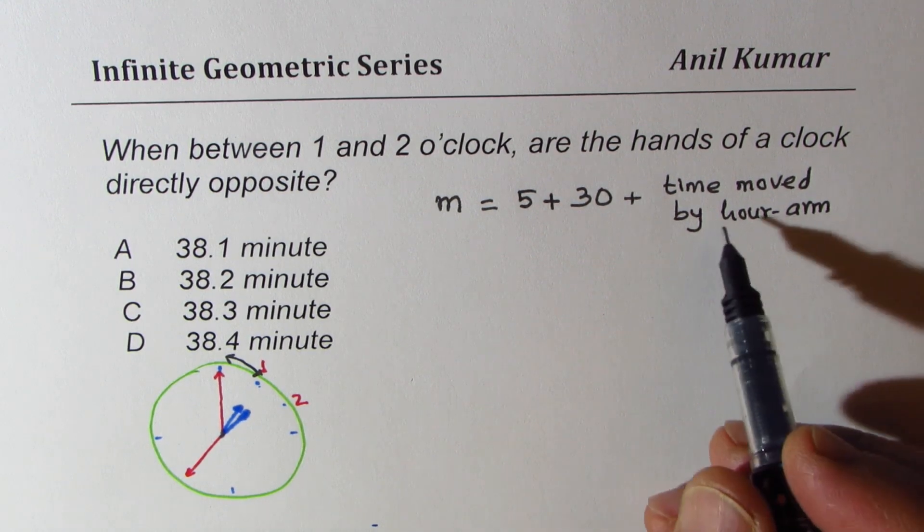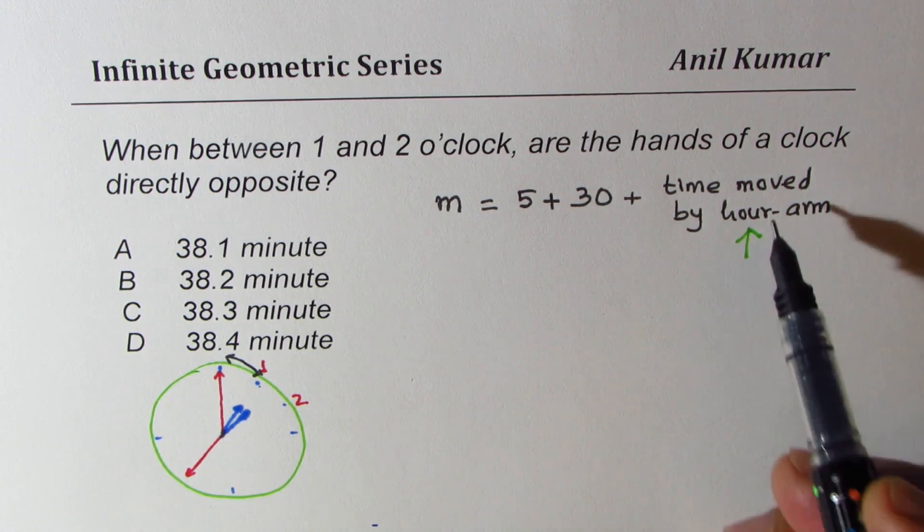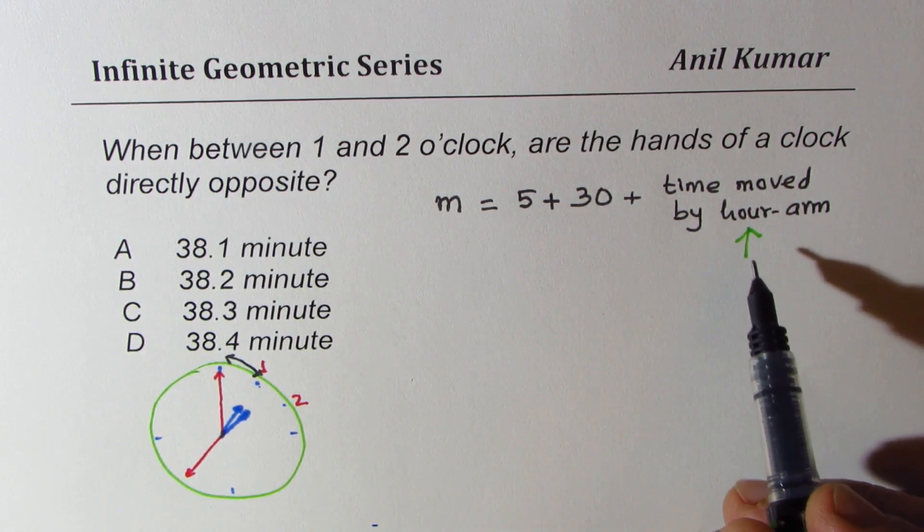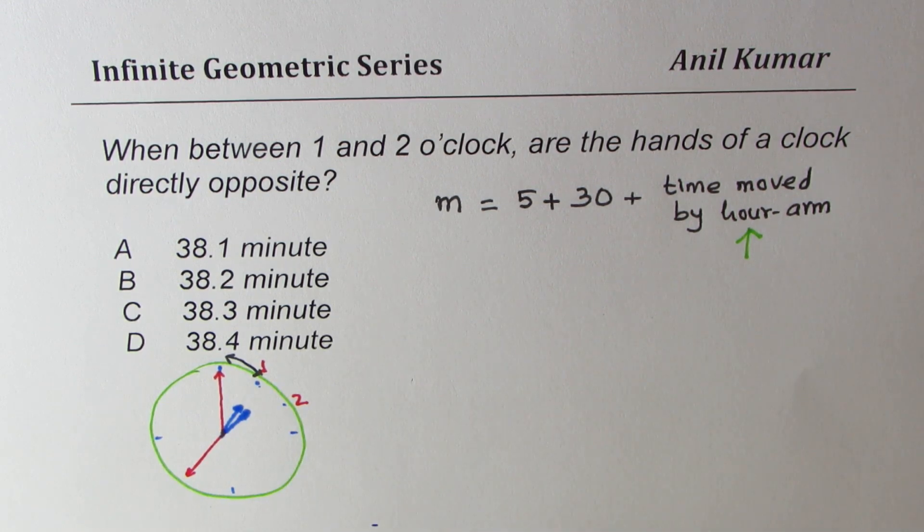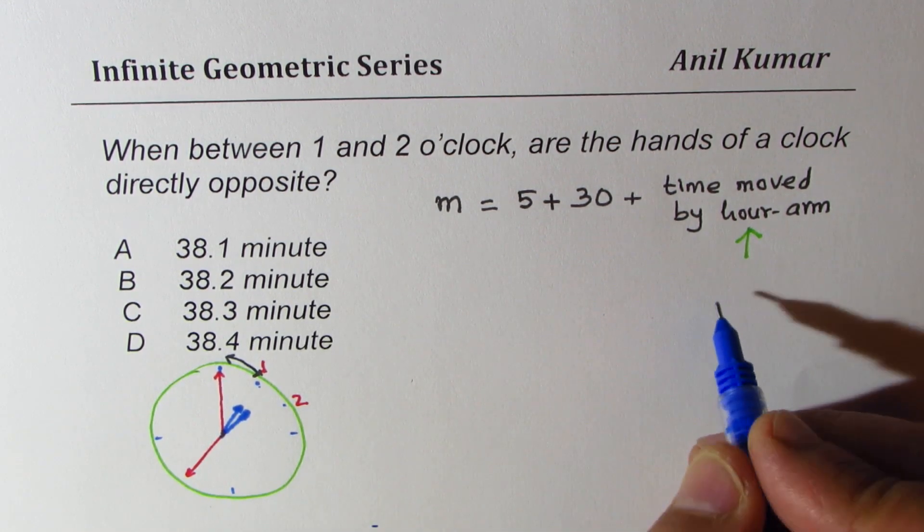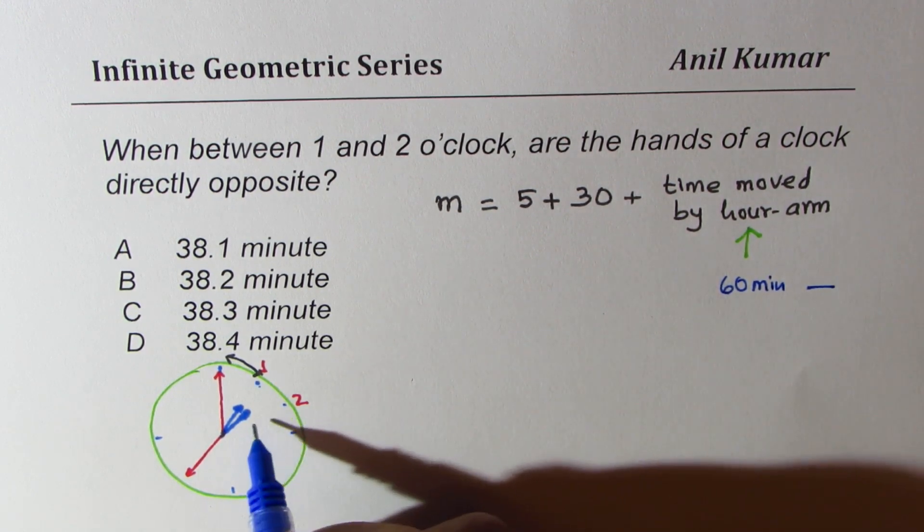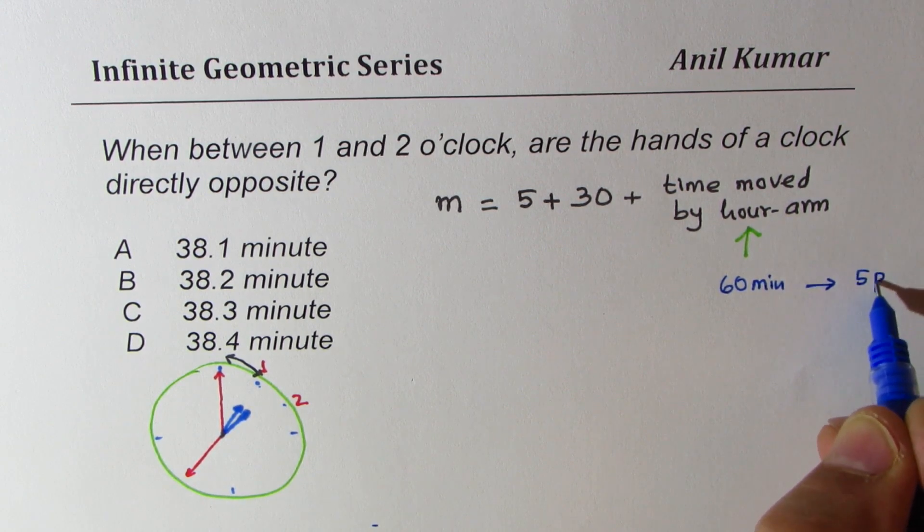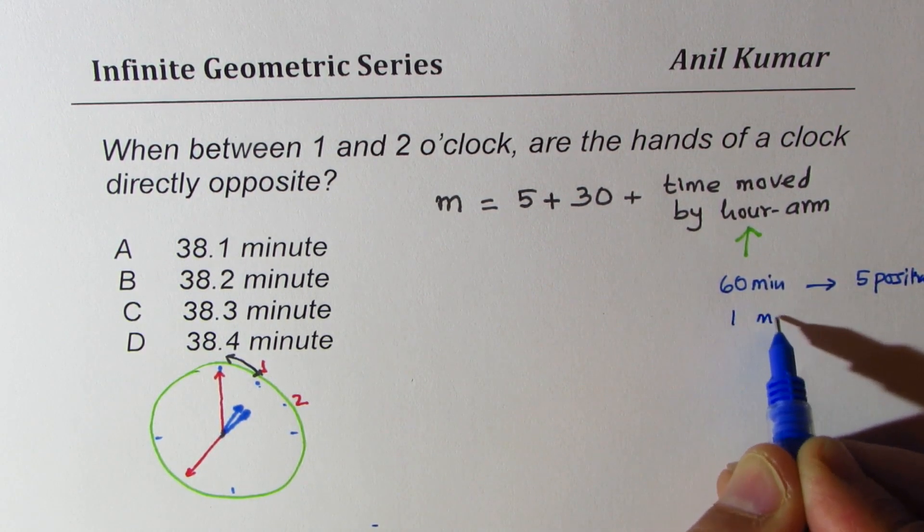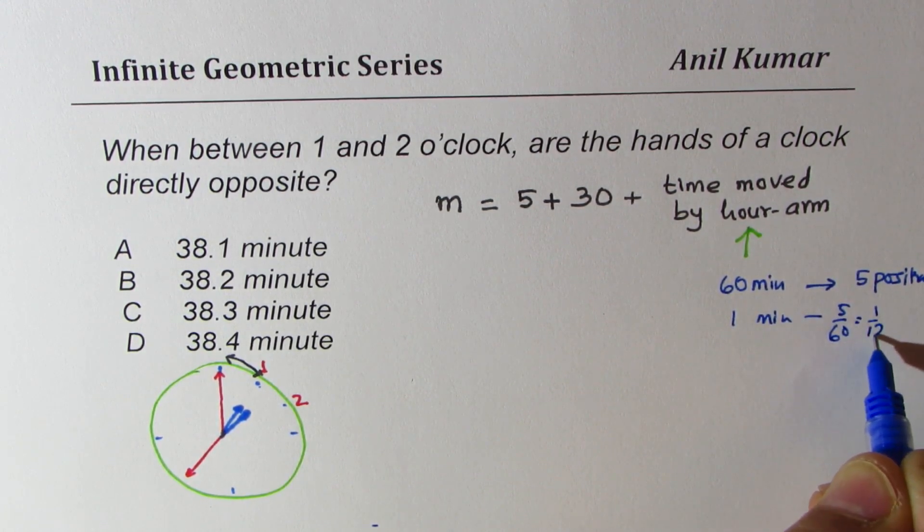In 60 minutes, let me show this calculation. In 60 minutes, the hour arm moves 5 positions. In 1 minute, it will go 5 over 60, which is 1 over 12.